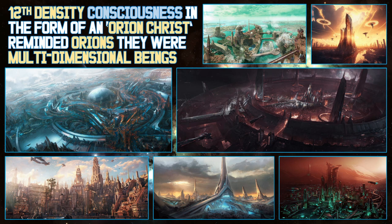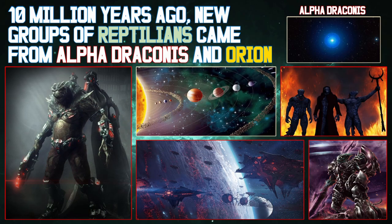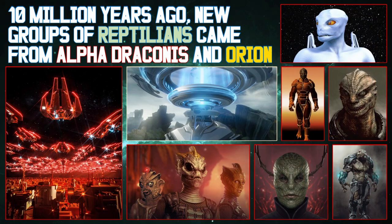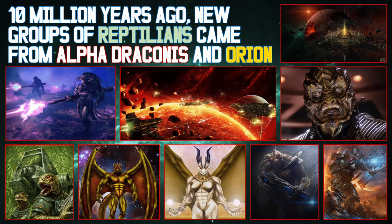Over time, peace was established across most of the Orion Empire. Ten million years ago, new groups of Reptilians from Alpha Draconis and Orion came to Maldek and Mars for exploration and conquest. Alpha Draconis is 309 light-years from Earth. The Orions and Draconians interbred with species already living on Maldek and Mars. Maldecian civilisation developed into warring factions and discovered neutron technology. Nuclear conflicts escalated, eventually shattering the planet and creating the asteroid belt.